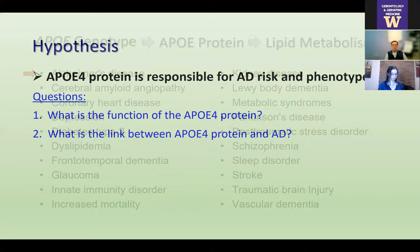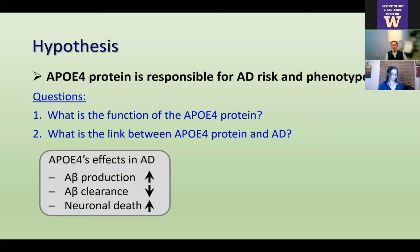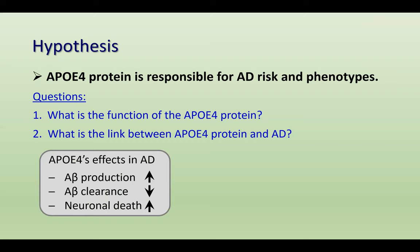Throughout the past 30 years, the consensus on APOE protein in AD is that APOE protein can increase A-beta production and decrease A-beta clearance, causing plaques to form and increasing neuronal death, leading to dementia. But whether APOE protein has a direct causal effect is still under heavy debate. A major reason is that much of this data was generated by animal or cellular models, creating a steep translational gap. That's also one reason you don't see many clinical trials actually based on APOE.